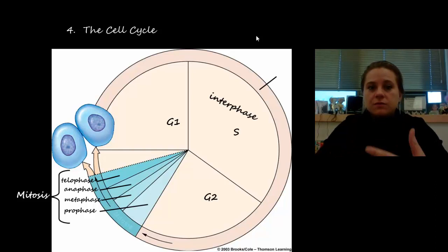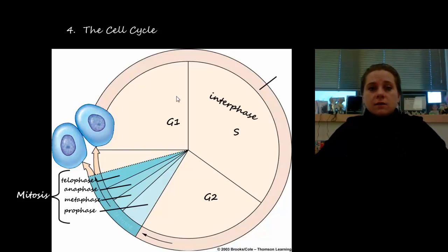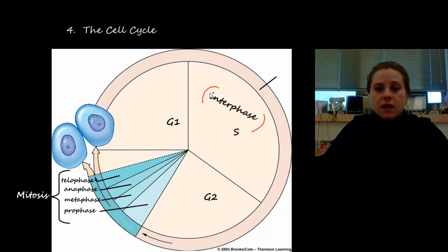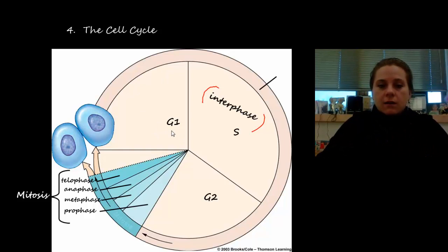Let's look at the cell cycle — the life of a cell as it starts as a single cell and ends up as two. We can break it down into stages to better understand what's going on inside the cell. The business-as-usual phase, where the cell spends most of its time, is called interphase. Within interphase, I can break it into three pieces: G1 growth, where the cell initially grows and starts working as it's supposed to.